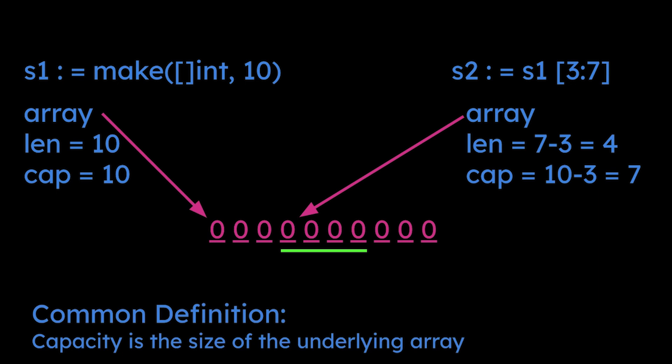You'll see that capacity is the size of the underlying array, but that's not completely true. If that were true, S2 would have a capacity of 10 because it shares the same underlying array as S1. But if you think about it, the first three spots of that underlying array don't mean anything to S2.